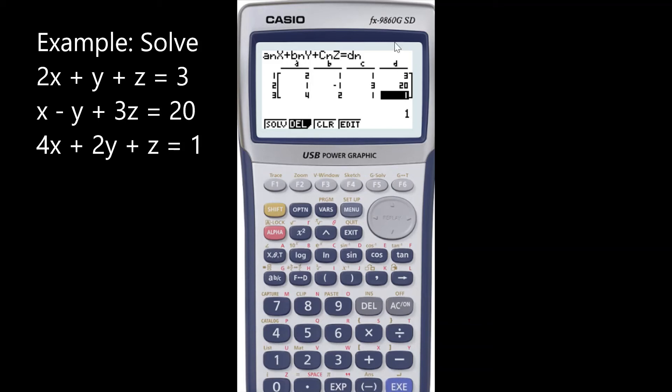Now once I've entered all of the values, just hit solve and it will give you the values for each of the variables. So in this case X is 1, Y is negative 4, and Z is 5.